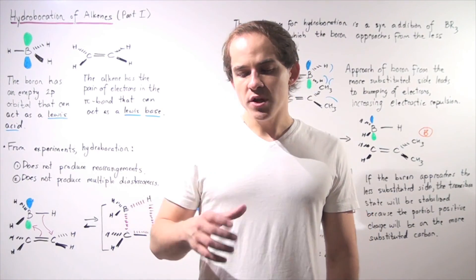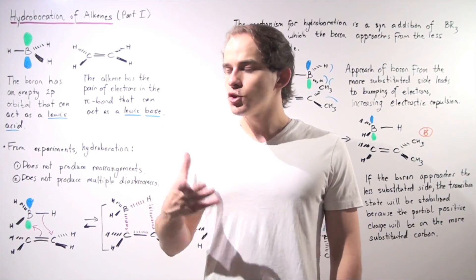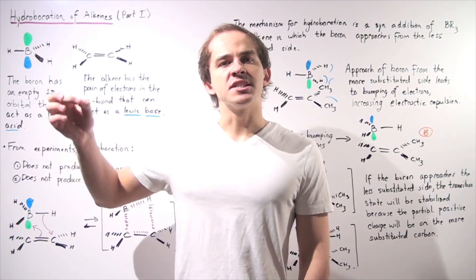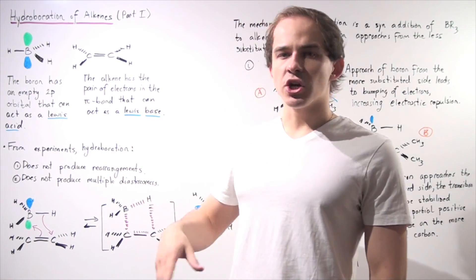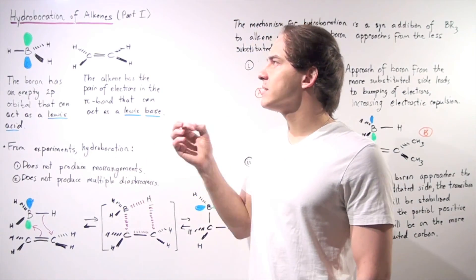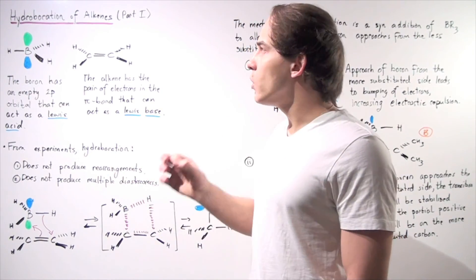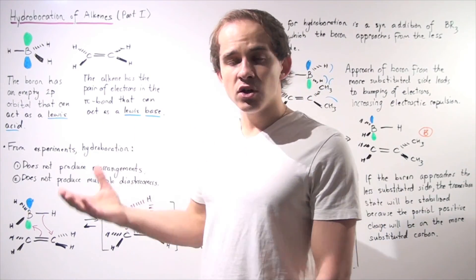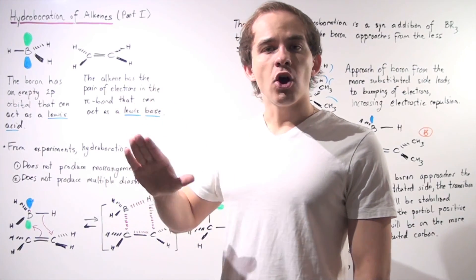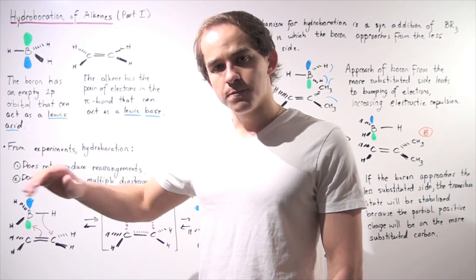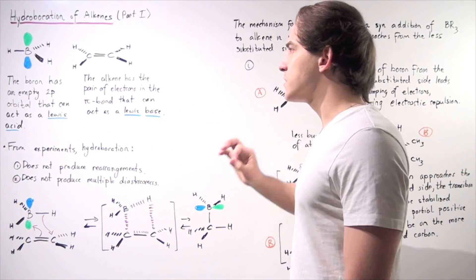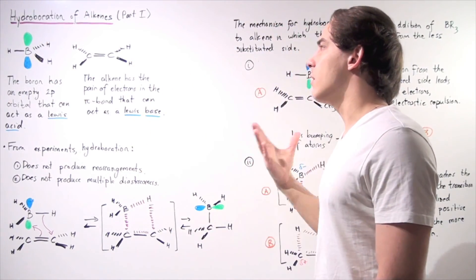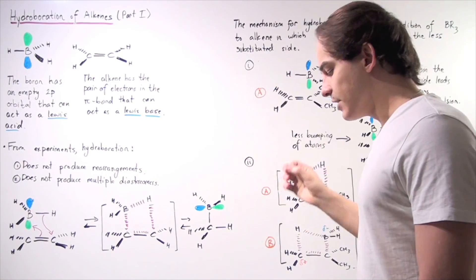Thus far in our discussions, we were able to devise a way to produce alcohols from alkenes that are the more substituted alcohols. In this lecture and the following lecture, we're going to discuss a mechanism known as hydroboration of alkenes that will allow us to produce alcohols from alkenes that are the less substituted. In this lecture, we're going to focus on the structure of our hydroboron as well as the mechanism of this reaction called hydroboration.